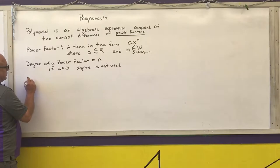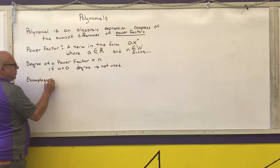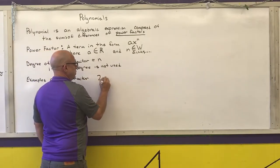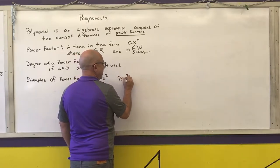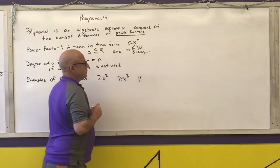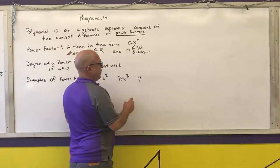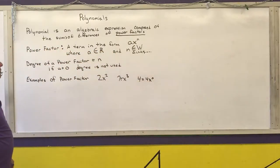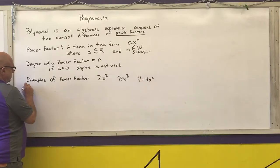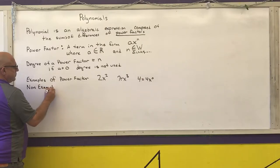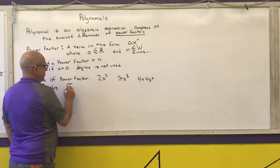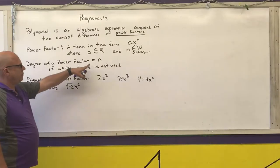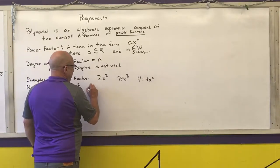Examples of power factors: 2X squared, pi·X cubed, and 4. The reason 4 is a power factor is because 4 can be written as 4·X^0, and since X^0 is 1, that equals 4. Non-examples include the square root of negative 2 times X squared, because the square root of negative 2 is not a real number — A has to be a real number.